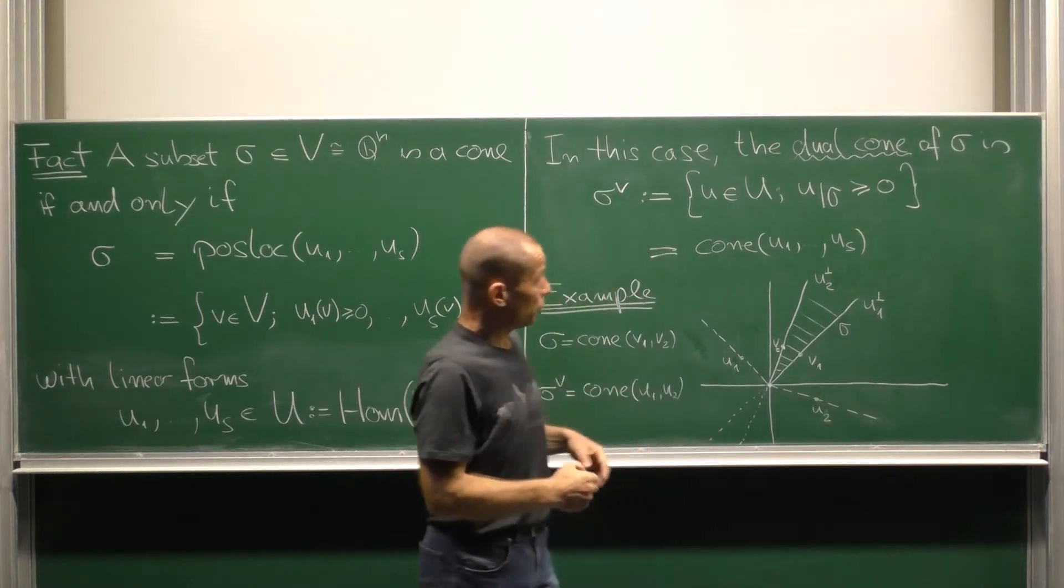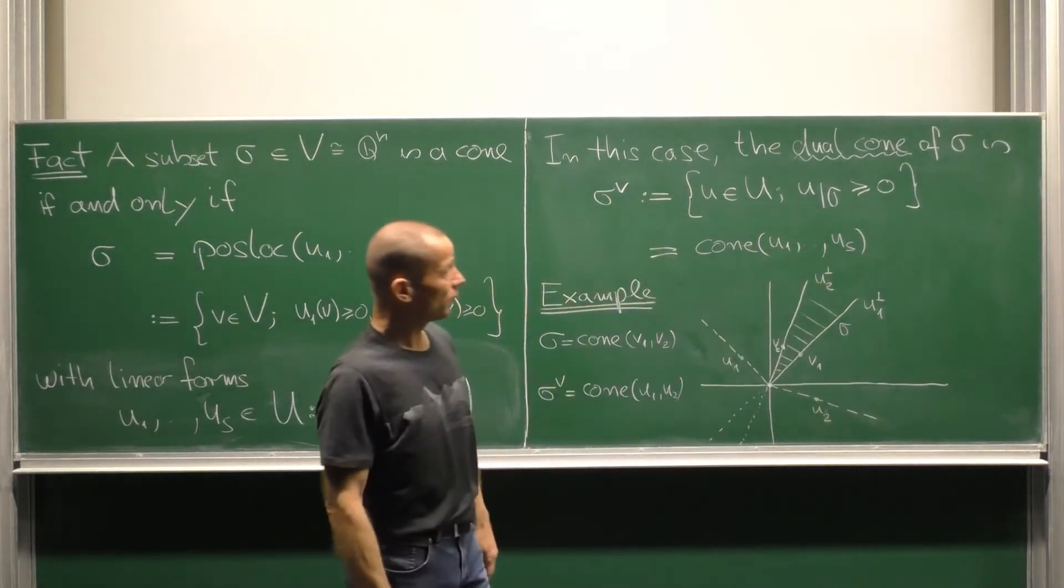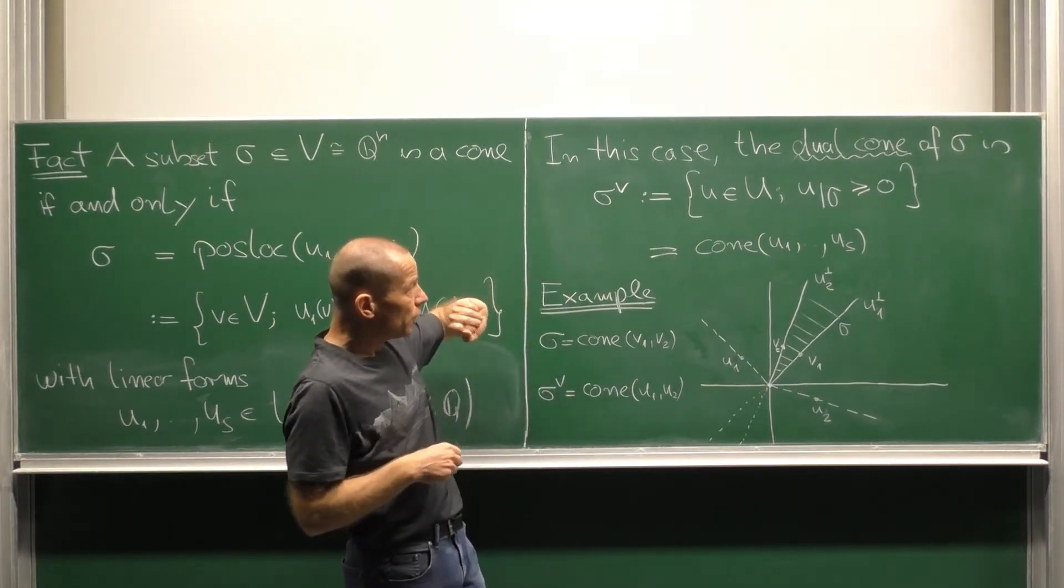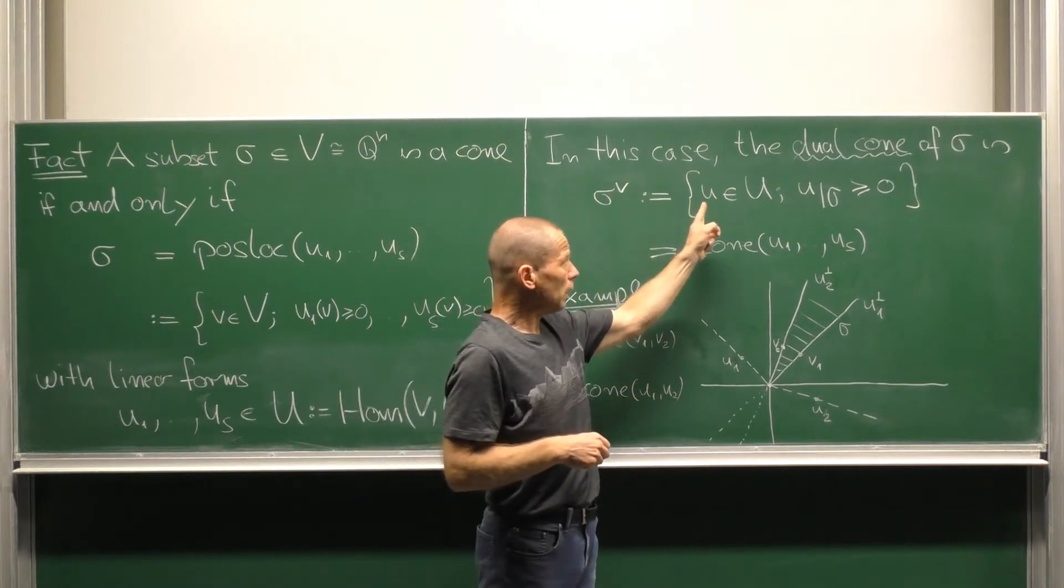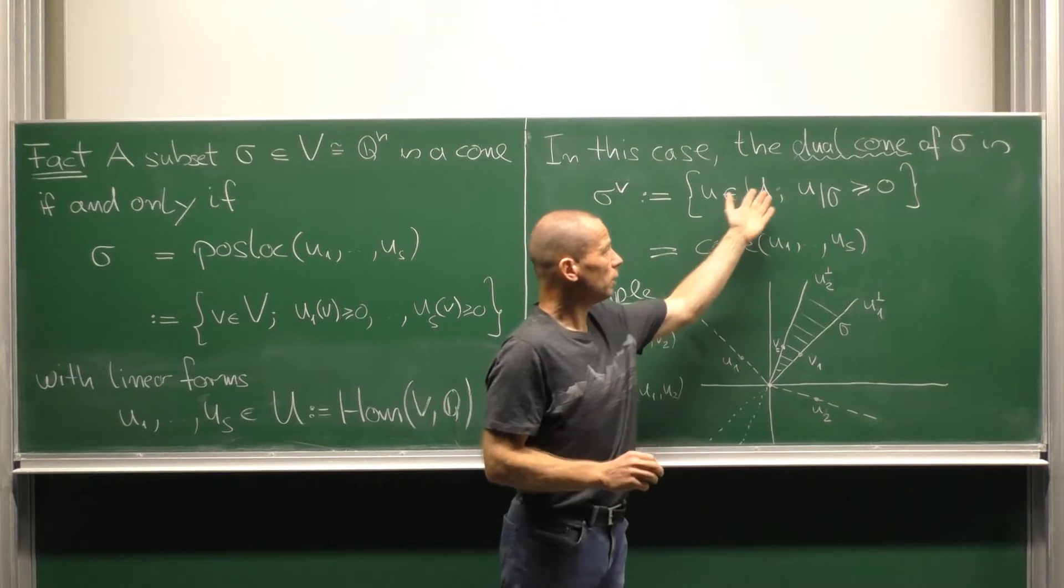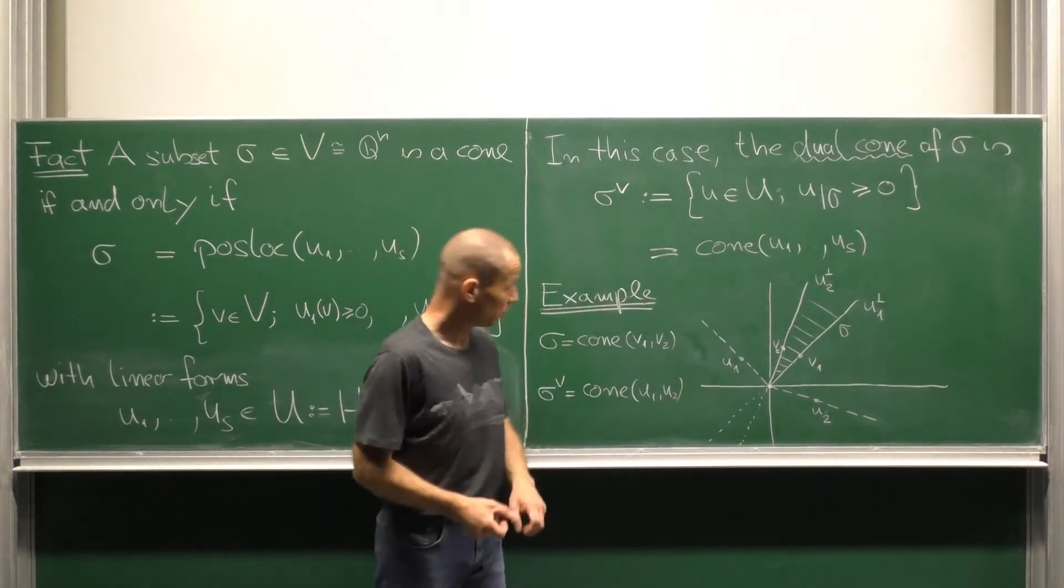If we are in this situation then these describing linear forms generate the dual cone. The dual cone consists by definition of all elements u in the dual space which evaluate non-negatively along the whole sigma.